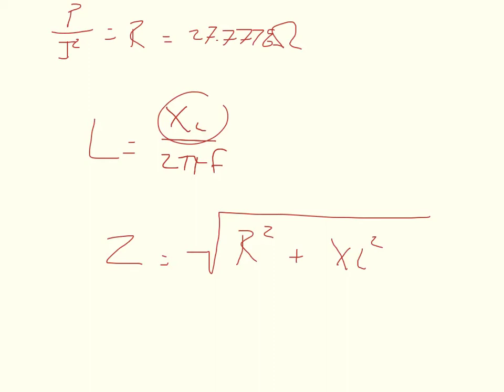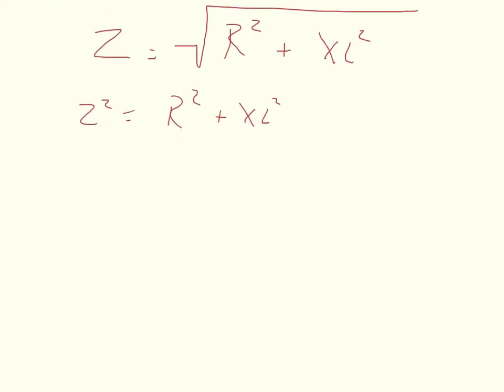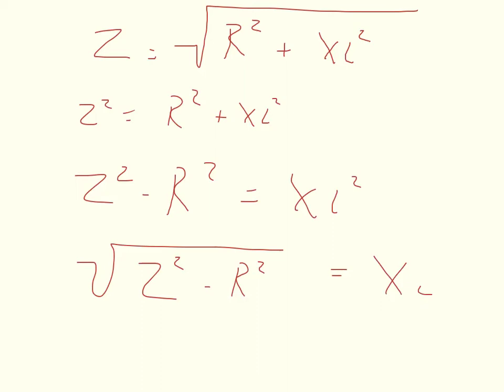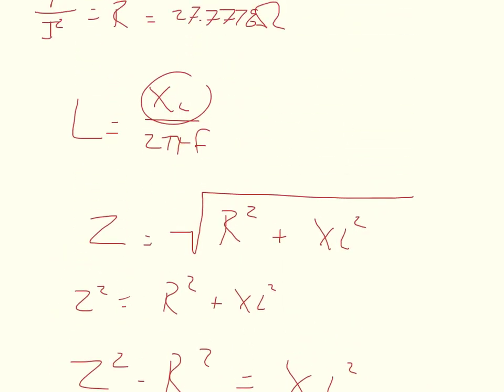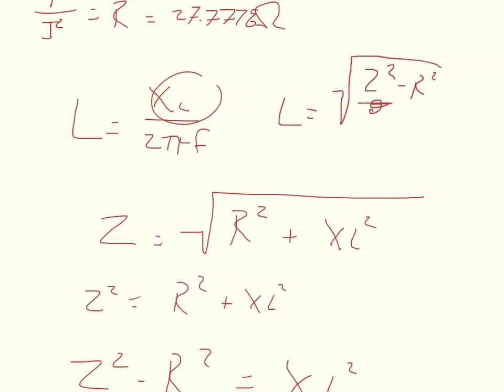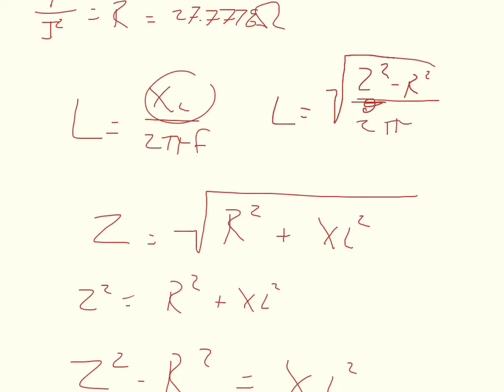So if we square both sides, we get that Z squared is equal to R squared plus XL squared. And then we can subtract R squared. And we get that Z squared minus R squared is equal to XL squared. And then we take the square root of Z squared minus R squared, and it equals the inductive reactance. We can take this equation and we can plug it back into this equation. So we'll get that L is equal to the square root of Z squared minus R squared, divided by 2 times pi times the frequency.